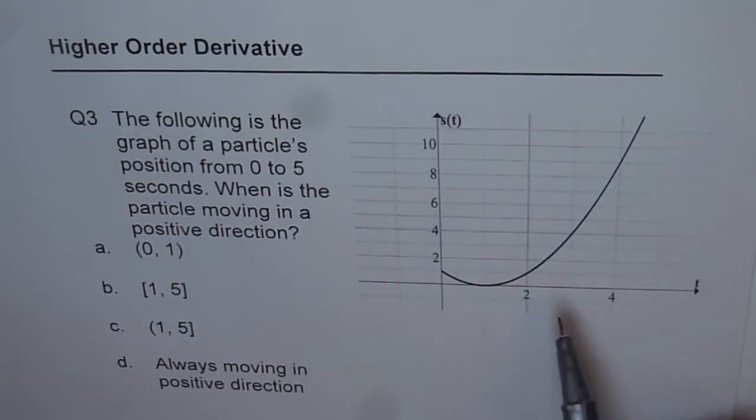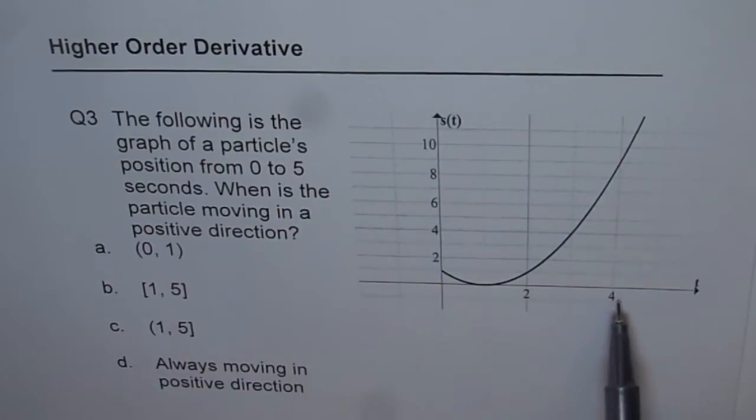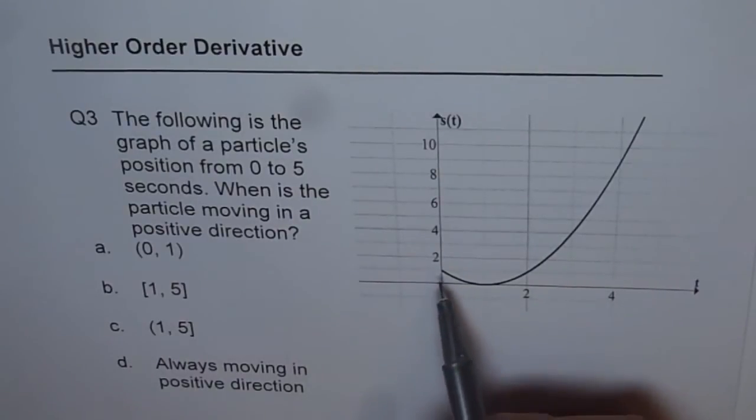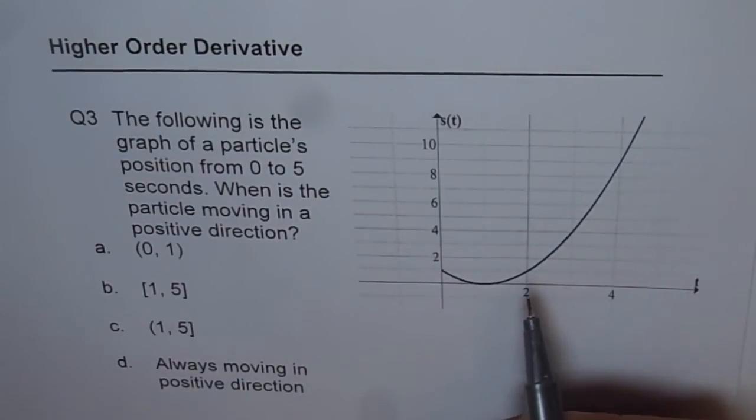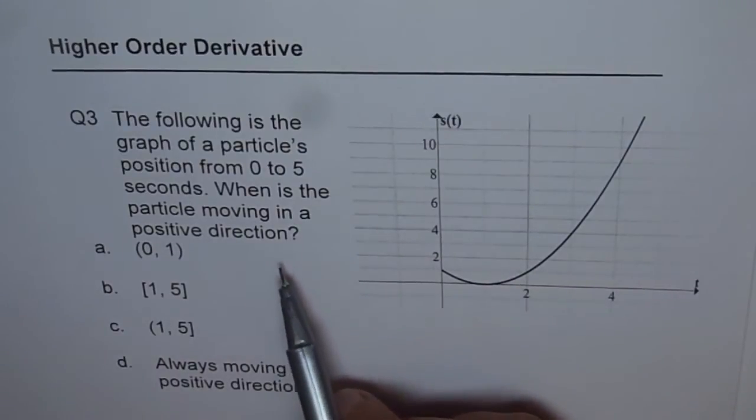So here is a graph for a particle moving in 0 to 5 seconds. Now this is the displacement graph. To figure out when is the particle moving in the positive direction,